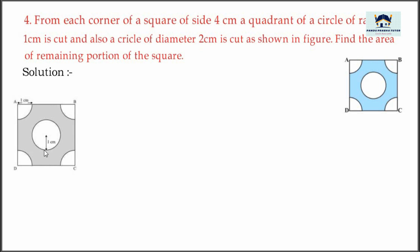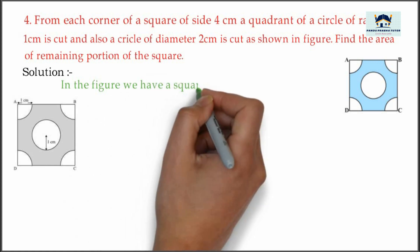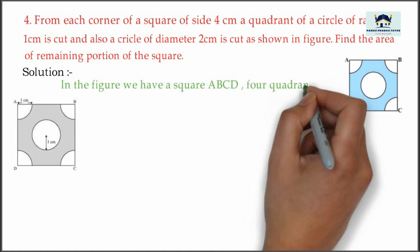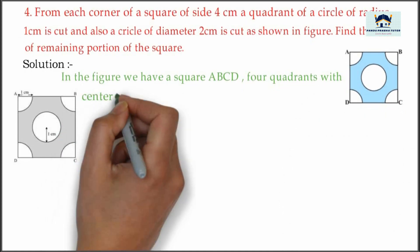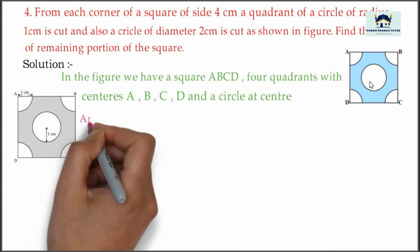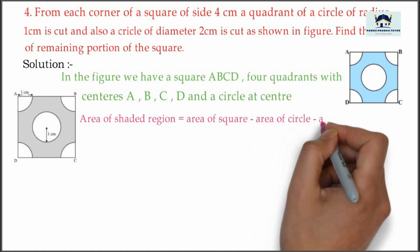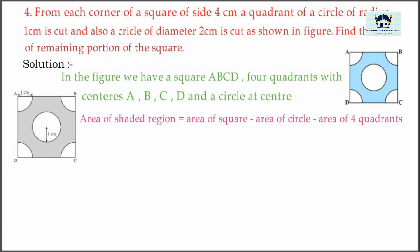Quadrant radius is 1 centimeter; inner circle diameter is 2 centimeter. In the figure we have a square ABCD, four quadrants with centers A, B, C, D, and a circle at the center. Therefore, area of the shaded region is equal to area of square minus area of circle minus area of four quadrants. In the figure we have four quadrants and one inner circle.